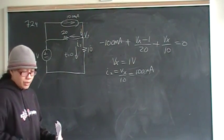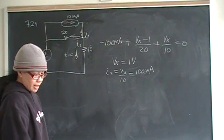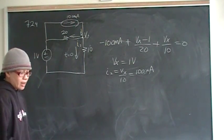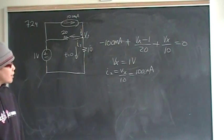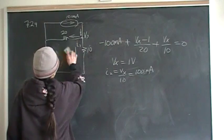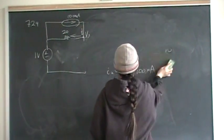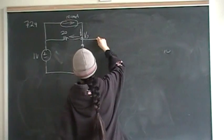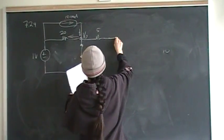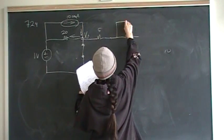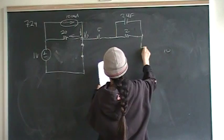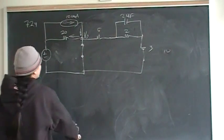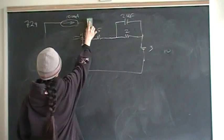So I1 before time zero equals I2 because the capacitor is open and they are both 100 milliamps — that is the answer to part A. Now we want to find I1 and I2 after the switch closes. We restore the circuit: we have 5 ohms, 2 ohms, 2 microfarads, and 3 ohms. Once we close the switch, we effectively short out and remove that part of the circuit — it's shorted out, so it's gone.